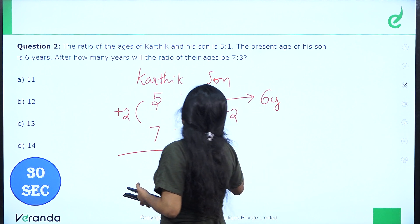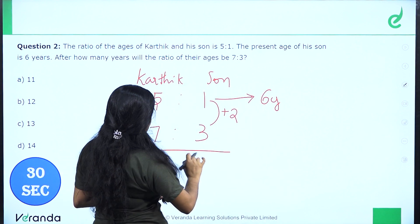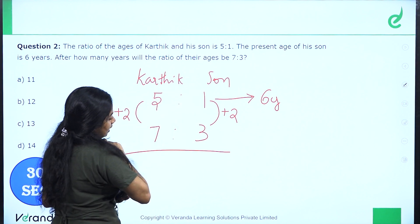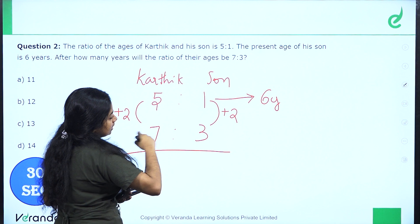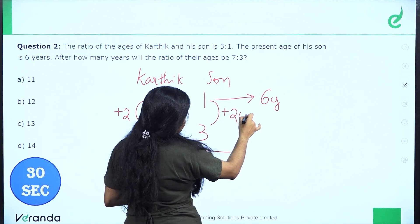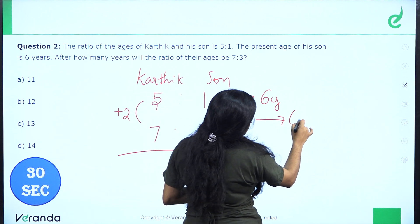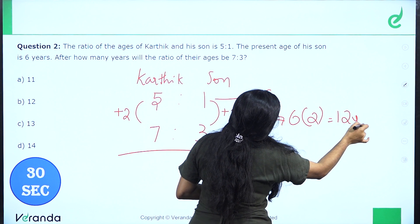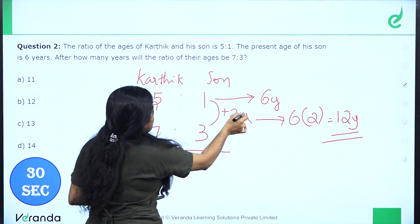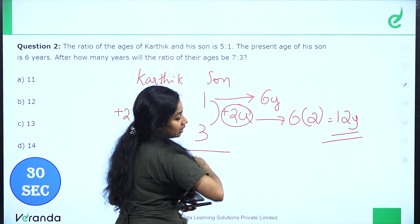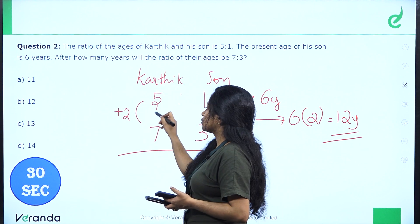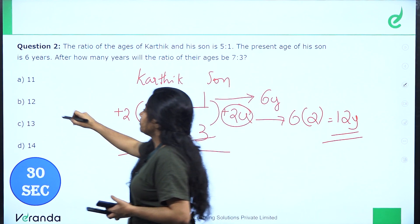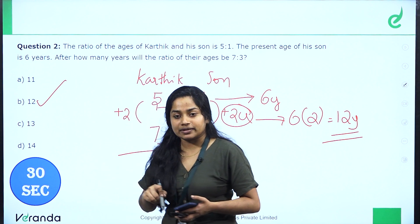One unit in 6 years. So 2 units represent 6 into 2, which is 12 years. That means in 12 years, the ratio changes from 5 is to 1 to 7 is to 3. Option B is the correct answer: 12 years. Let's look at the next question.